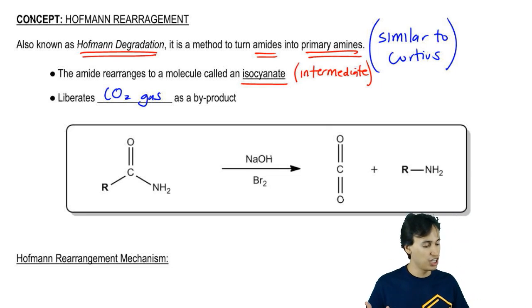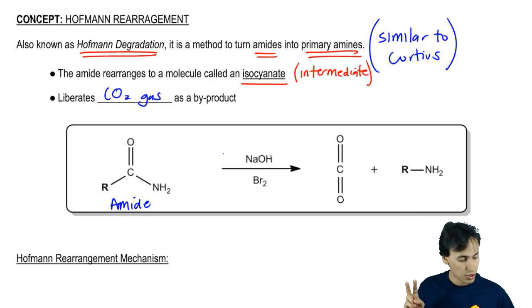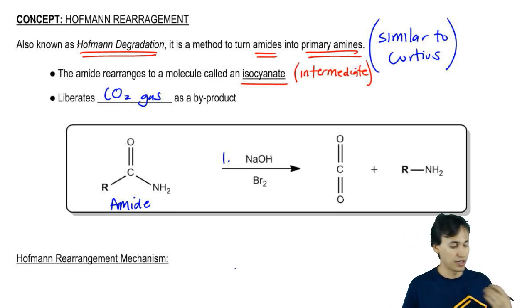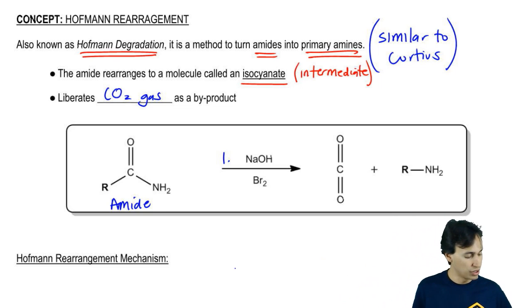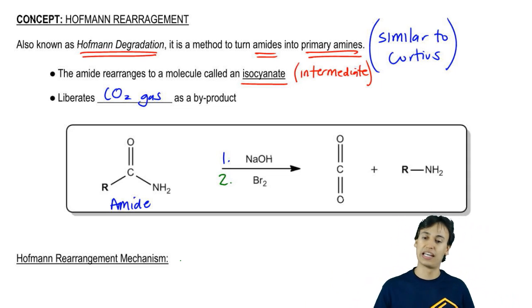Here's the general reaction. We've got an amide and you react it with two different steps. One, you have a base that's going to deprotonate the nitrogen and turn it into a nucleophile. And we've got electrophilic Br2. The Br2 is what the nitrogen then attacks.